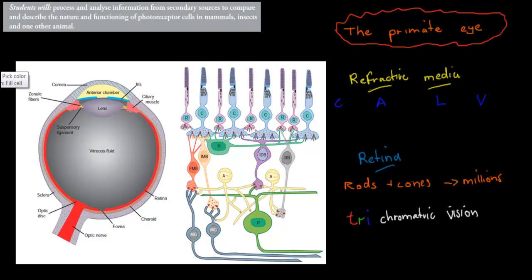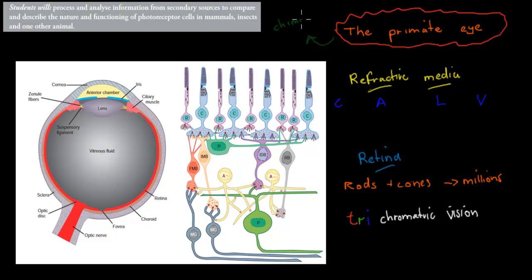First we're going to start with the primate eye. A primate, remember, is just, for example, a chimp, a baboon, an orang-utan or a gibbon — those would be primates, so they would be quite related to us. A primate eye looks very similar; it's basically just like our eye, which is important to know. So the primate eye would be the eye of chimps, as one example, and it would look quite similar.